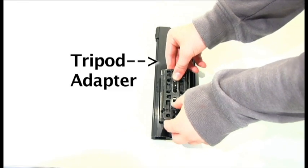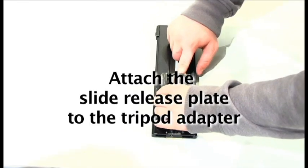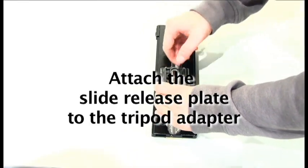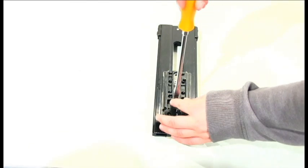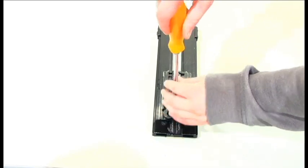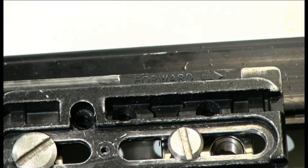Next attach the center of the quick release plate at the approximate center of gravity position on the tripod adapter with both screws. Make sure they are both pointing at the same direction. The front will be marked with an arrow pointing at the tripod adapter lock lever.